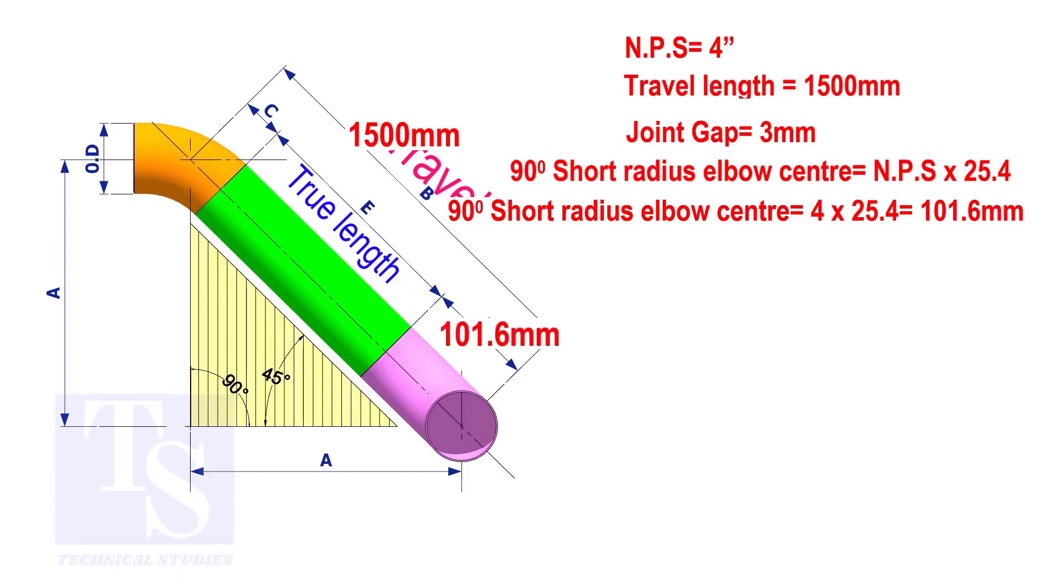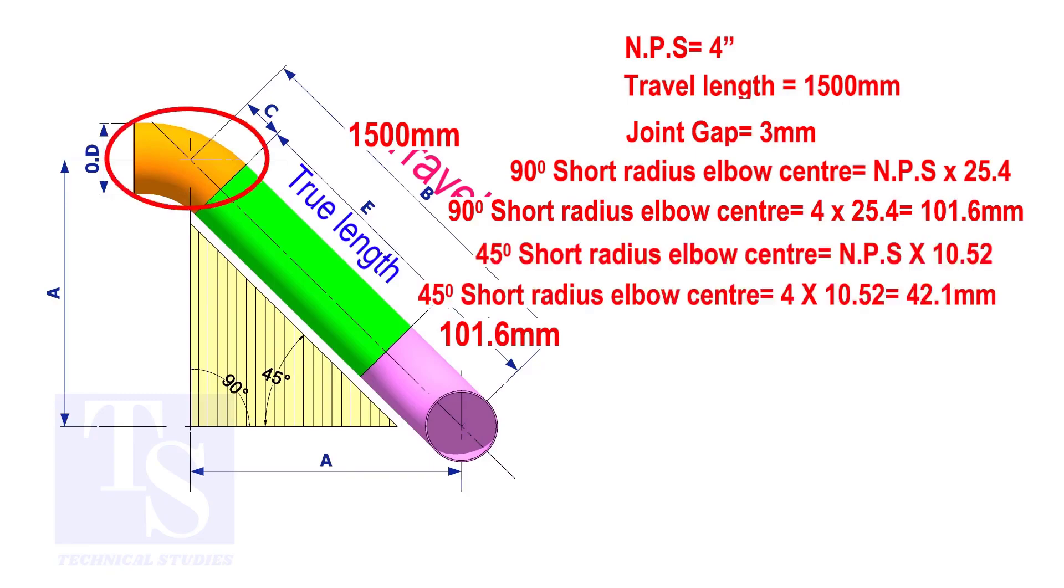To calculate the elbow center of a 45 degree short radius elbow, multiply the nominal pipe size by 10.52. The answer is 42.1 millimeters.